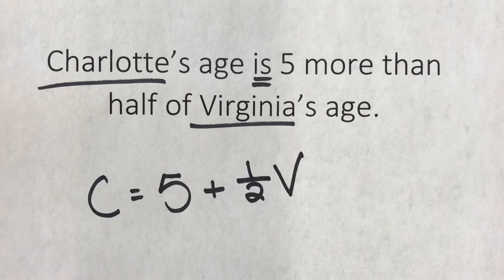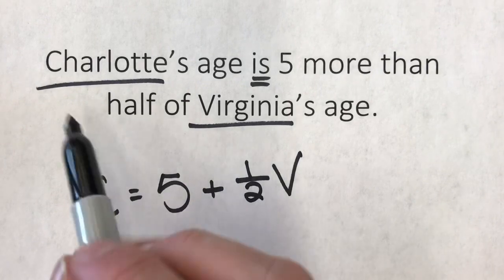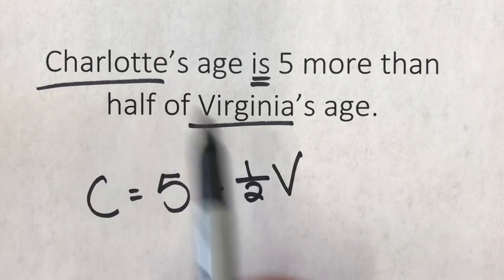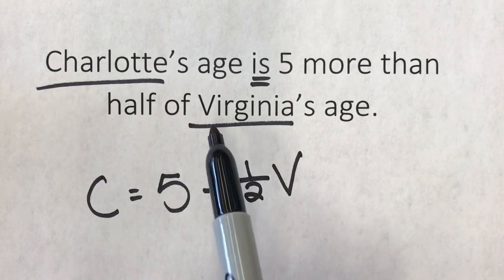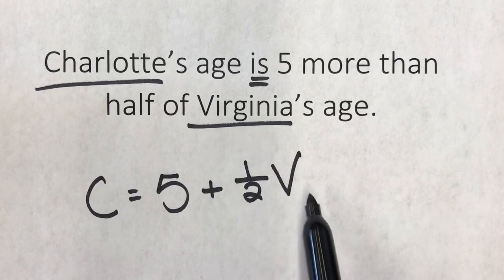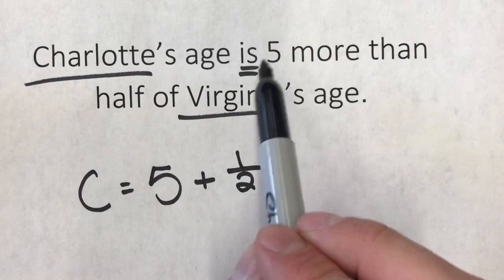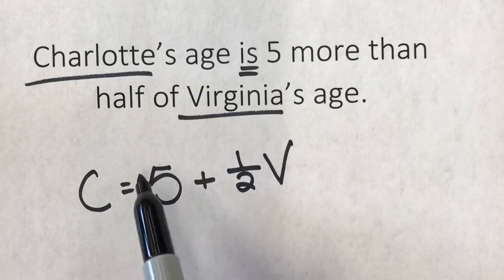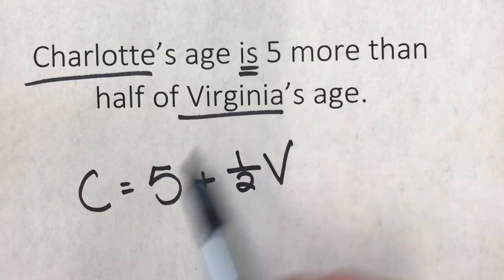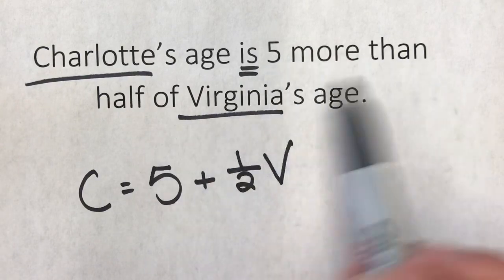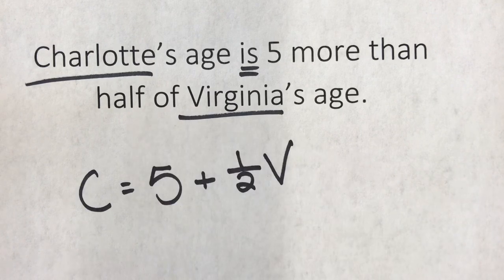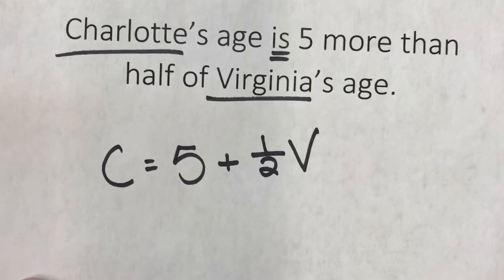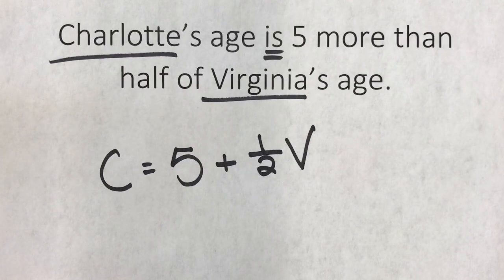What I did is I took the key words: Charlotte became C, Virginia became V. 'Is' is always an equals sign. 'Five more than' means plus. And 'half of' is one-half. Simple.